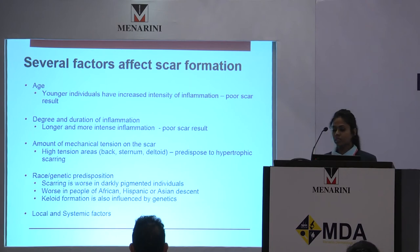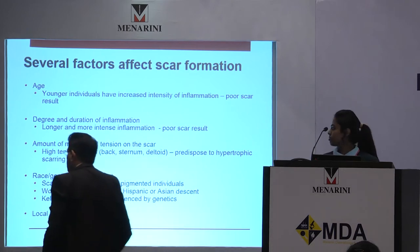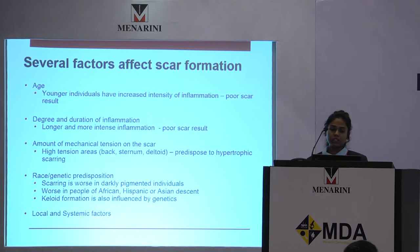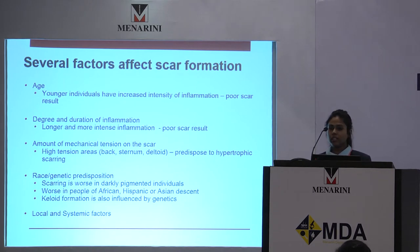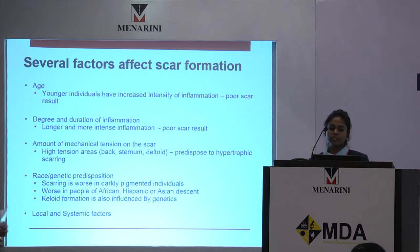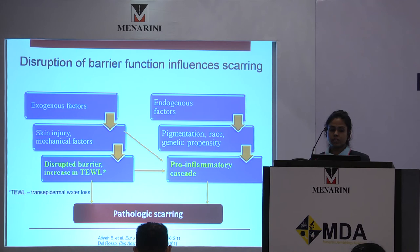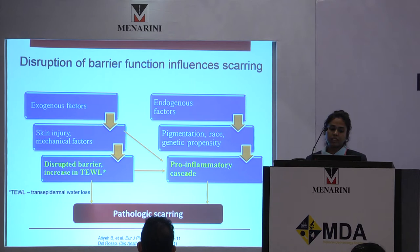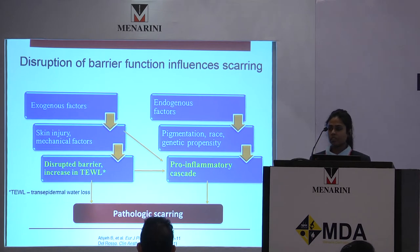There are several factors affecting scar formation: age, degree of inflammation, amount of mechanical tension on the scars, race like African descent, Hispanics, and Asian descents. Local factors like abnormal blood circulation, infections, and systemic factors like diabetes or renal issues. These exogenous and endogenous factors disrupt the barrier layer, increasing the transepidermal water loss and leading to a pro-inflammatory cascade, thus causing pathological scarring.